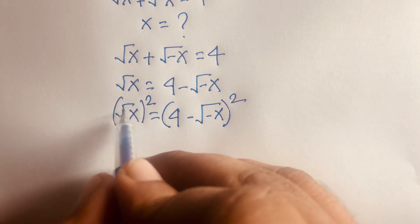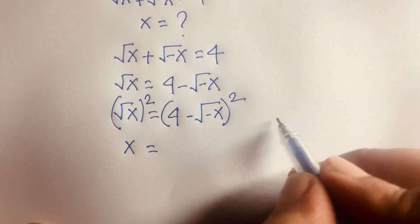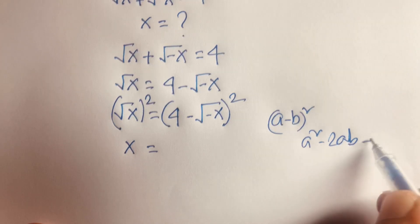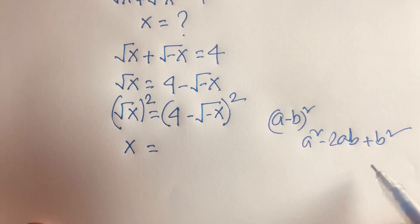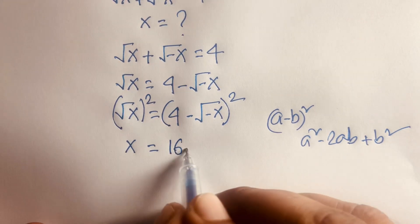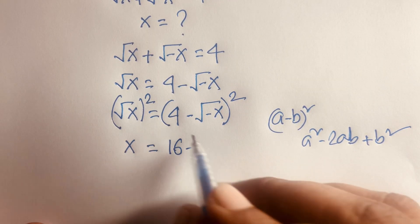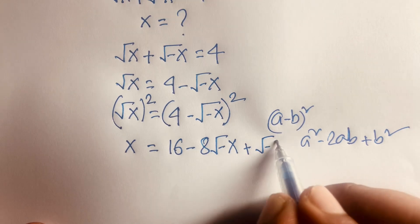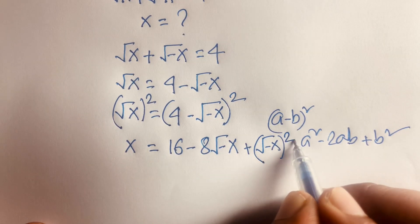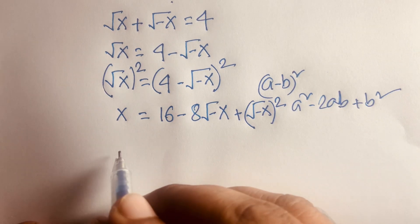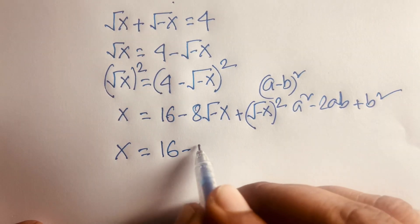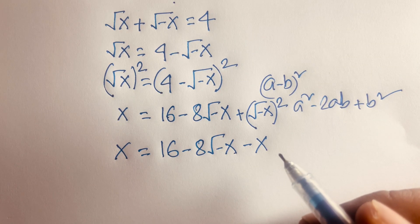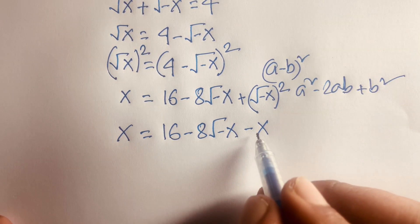After squaring, the square root cancels and we get x = (4 − √(−x))². Expanding using (a − b)² = a² − 2ab + b², this becomes x = 16 − 8√(−x) + (√(−x))², which simplifies to x = 16 − 8√(−x) − x.